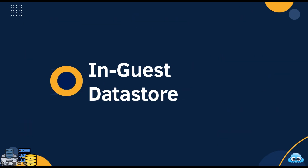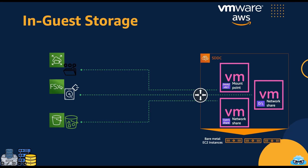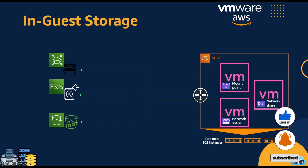Our final storage option within VMware Cloud on AWS revolves around InGuest datastores. InGuest datastores enable you to seamlessly integrate with native AWS services. You can use resources like Amazon Elastic File System (EFS), FSx for Windows, and Amazon S3 as additional datastore locations, directly accessible from virtual machines within your VMC cluster. These resources reside in a separate AWS account, and with proper networking connectivity established between the two accounts, you can achieve seamless data access and storage. This integration opens doors to a wide array of storage possibilities, leveraging the rich ecosystem of AWS services.